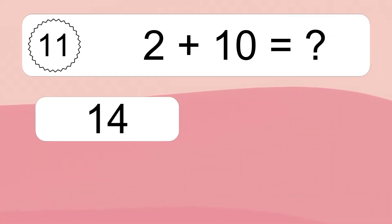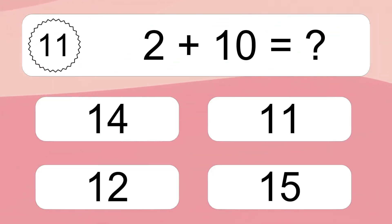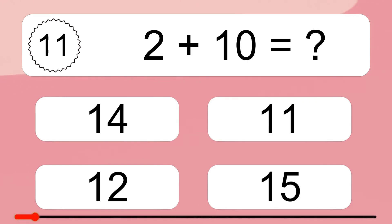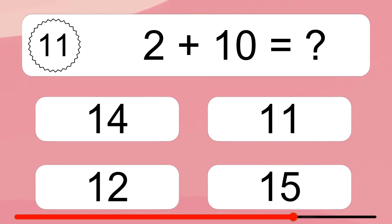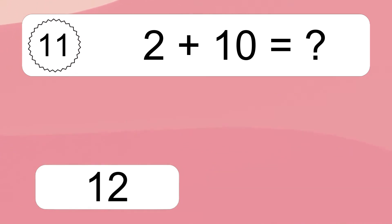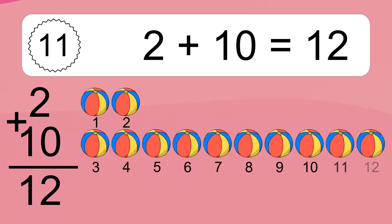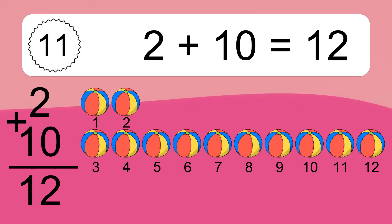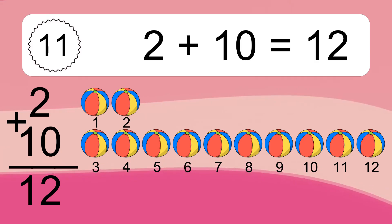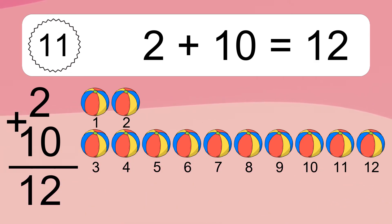2 plus 10 equals what? 2 plus 10 equals 12. Let's count it: 1, 2, 3, 4, 5, 6, 7, 8, 9, 10, 11, 12.